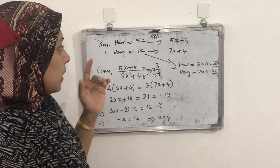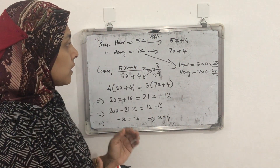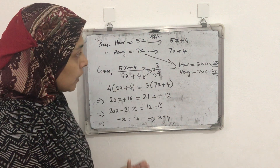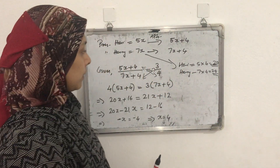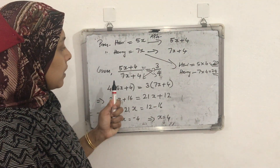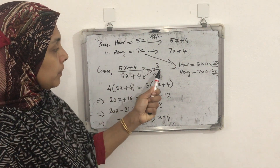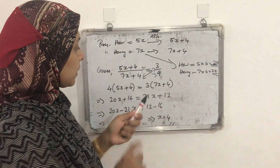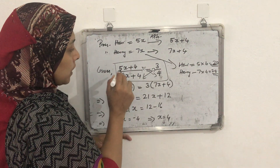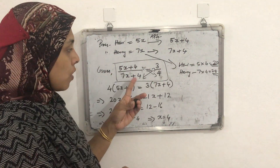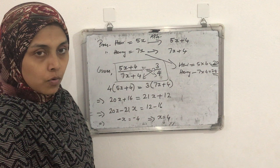First we took the ratio — if the ratio is given we can take it as 5x and 7x. Then after 4 years their ages will be 5x + 4 and 7x + 4. What is given? After 4 years the ratio of their ages becomes 3 is to 4. We write that equation from the given statement, and then it is easy for solving.